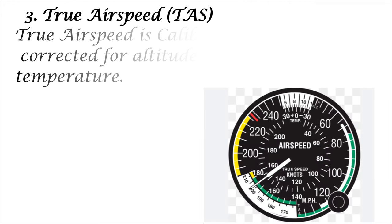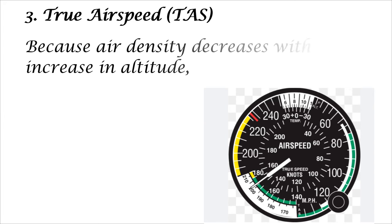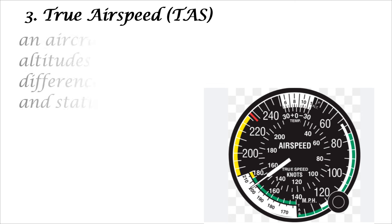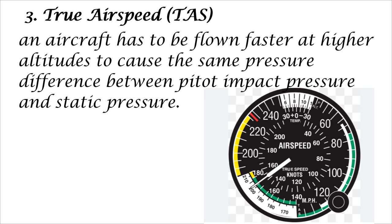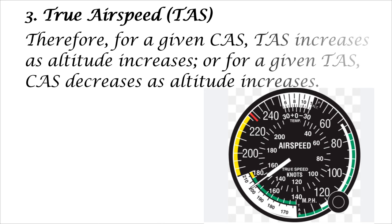Three: True Air Speed, TAS. True Air Speed is Calibrated Air Speed, CAS, corrected for altitude and non-standard temperature. Because air density decreases with an increase in altitude, an aircraft has to be flown faster at higher altitudes to cause the same pressure difference between pitot impact pressure and static pressure. Therefore, for a given CAS, TAS increases as altitude increases, or for a given TAS, CAS decreases as altitude increases.